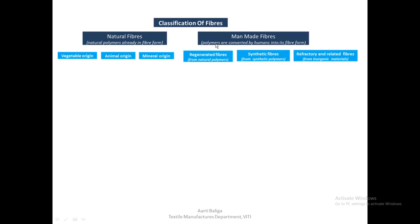Manmade fibers are polymers that are converted by humans into the fiber form. That means they are not naturally available in the fiber form; they exist in some other form and need to be converted. Fiber, as we know it, is a substance of long length and small width, so that would not be their natural form — it has to be converted by humans.